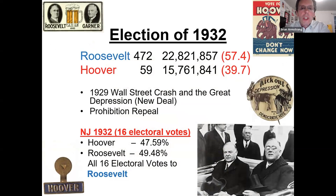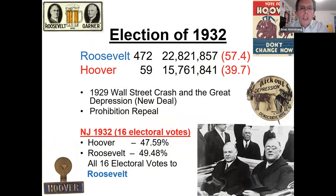The election of 1932 — the Depression had been going on for three or four years, things were getting worse. As it got into 1932, people were having problems eating and becoming homeless. Roosevelt came forward with a plan while Hoover was more laissez-faire and didn't believe in an active plan to change the economy. New Jersey went soundly for Roosevelt — a vote for the New Deal.